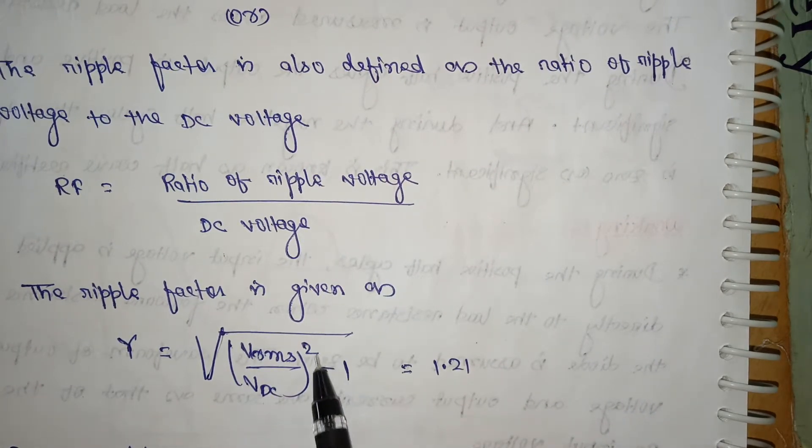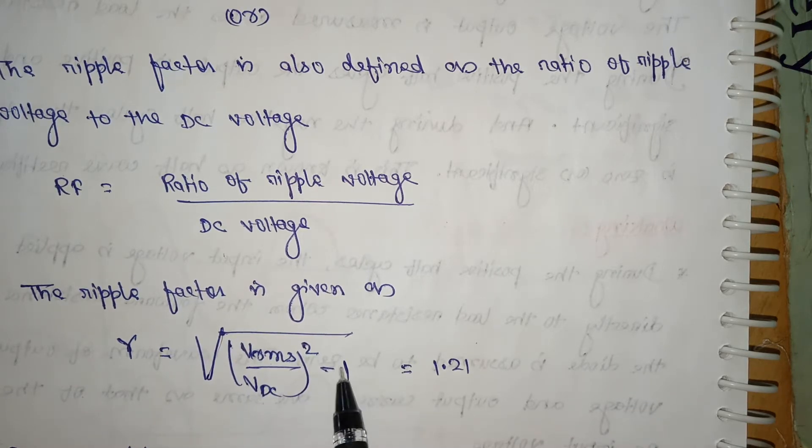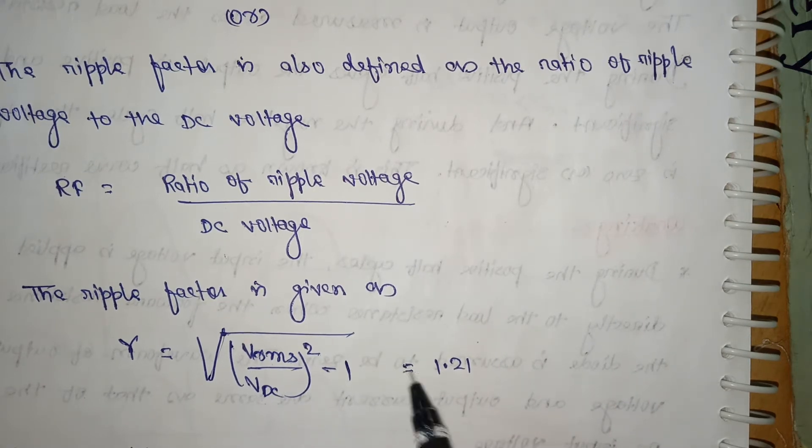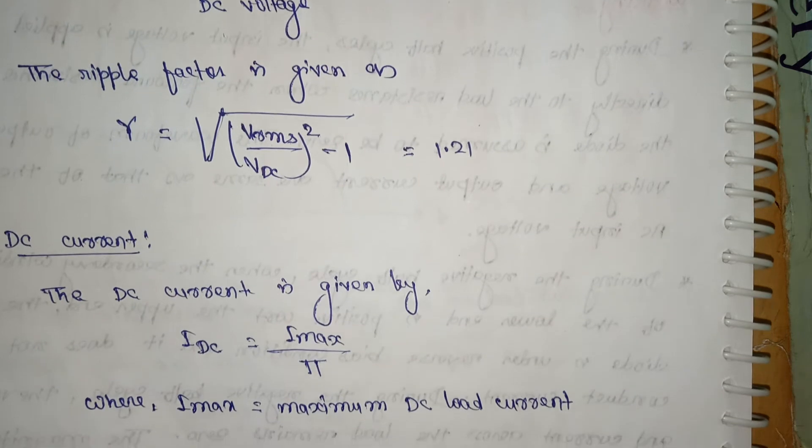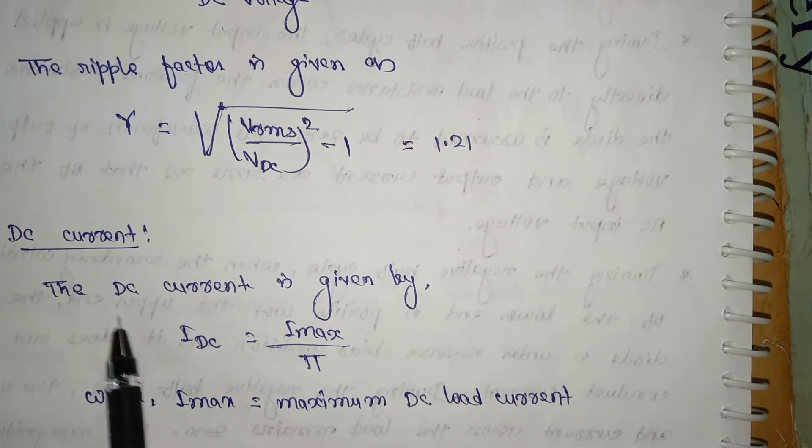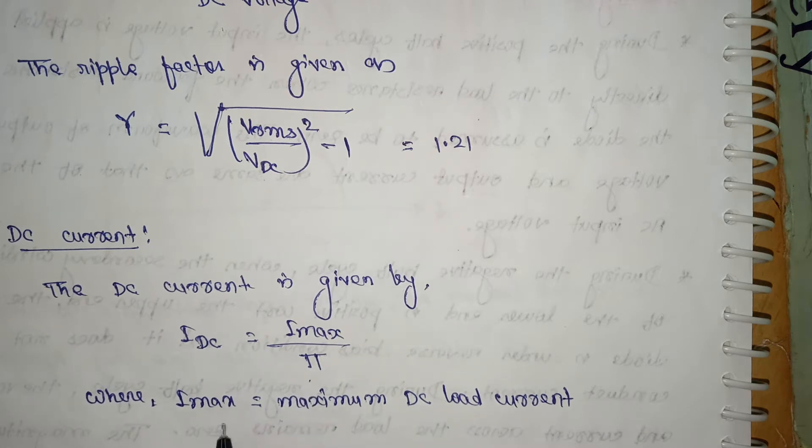The form factor is also given as gamma is equal to root of (VRMS/VDC)² minus 1, that is 1.21, the constant value. This is for DC current. The DC current is given by ID is equal to Imax by pi, where Imax is the maximum DC load current.